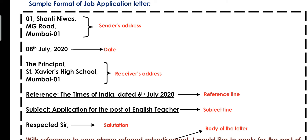Then we have to leave a line and write the date. The date format should be written very clearly — you can write it as 8th July 2020, or in the format 08-07-2020. Remember always that the date is written directly; 'DATE' as a label is not written before it.